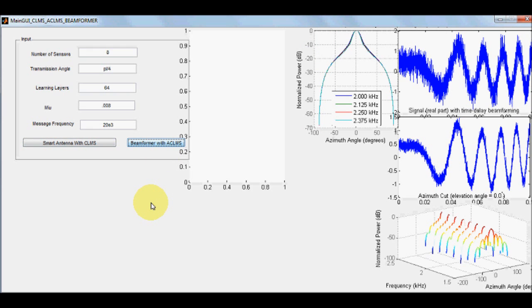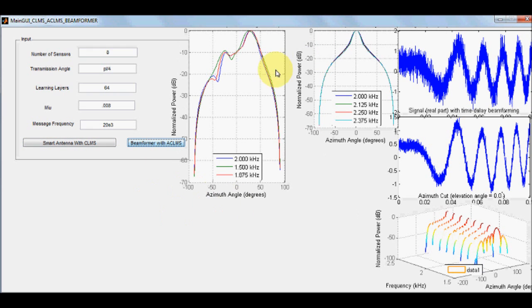The same thing that when we perform with ACLMS, the performance is little better in the main branch. However, it still has a significant side lobe.